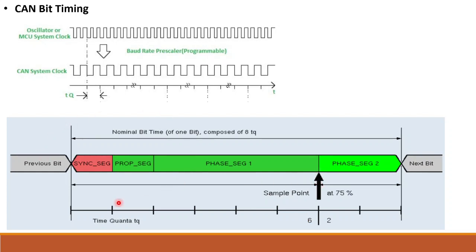CAN protocol uses different types of synchronization. The first one is hard synchronization. For example, the start bit is always a recessive-to-dominant, that is high-to-low transition. When we detect a high-to-low transition, we restart the nominal bit timing and start the sync segment. This is nothing but hard synchronization.